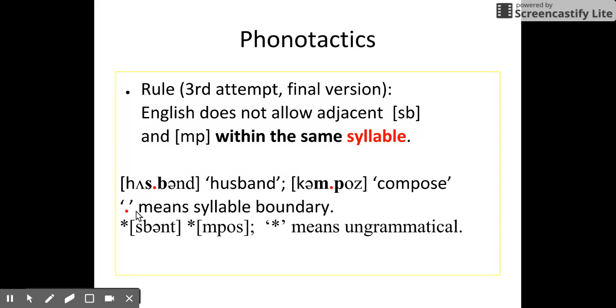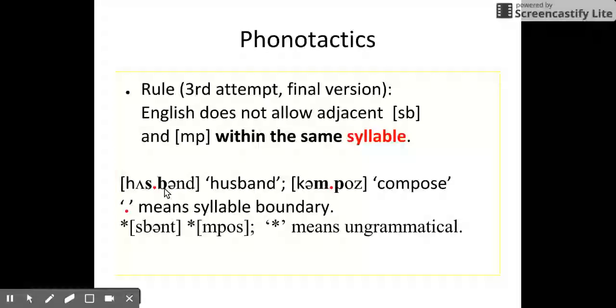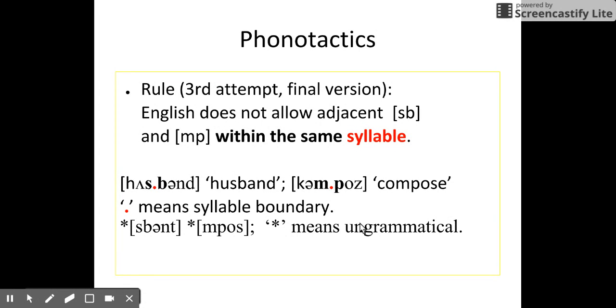So we use a dot to indicate syllable boundary. Husband actually has two syllables: hus and band. So [s] and [b] are in different syllables, so they are good. And here compose, we have com and pose in two different syllables, so they are okay from this rule.